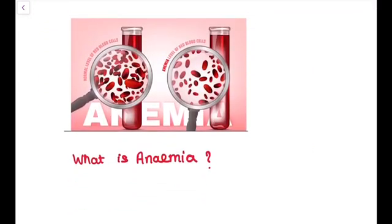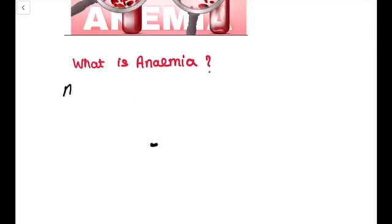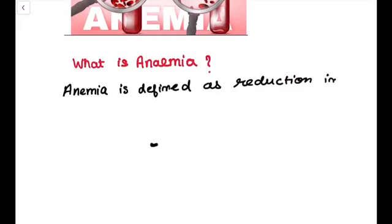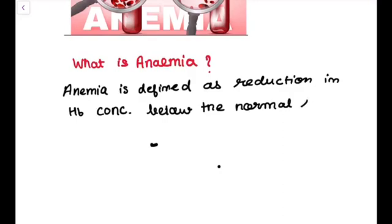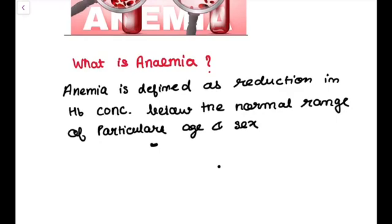So first of all, what is anemia? Anemia is defined as a reduction of total circulating red cell mass below normal level, but in practice it is not easy to measure the red cell mass. So anemia is defined on the basis of hematocrit value and the hemoglobin concentration. Anemia is defined as reduction in hemoglobin concentration below the normal range for particular age and sex. Here I mention age and sex because the normal range for male, female and infants are different.